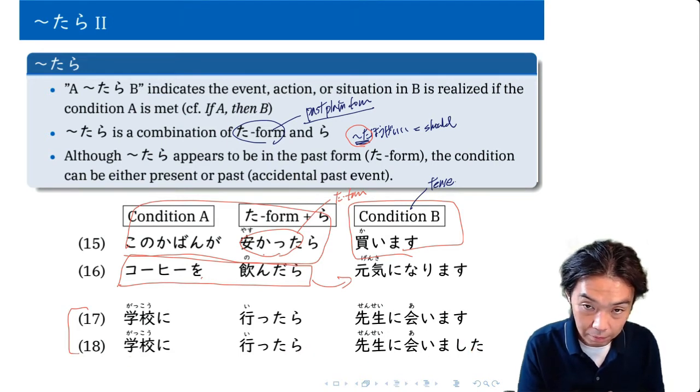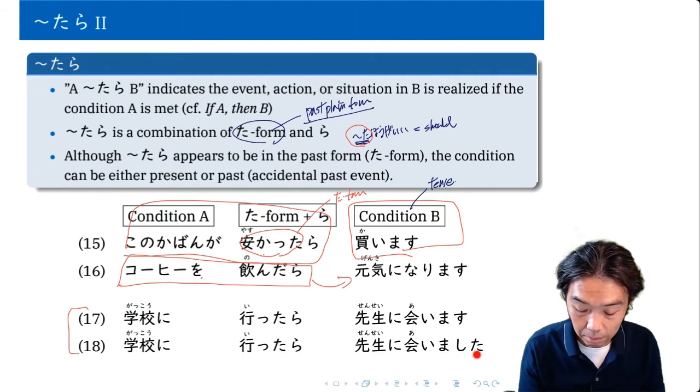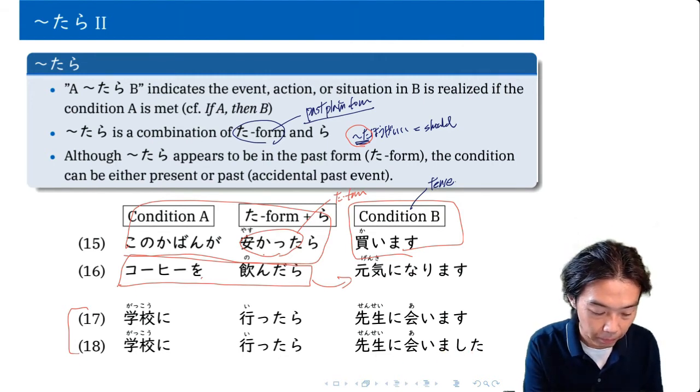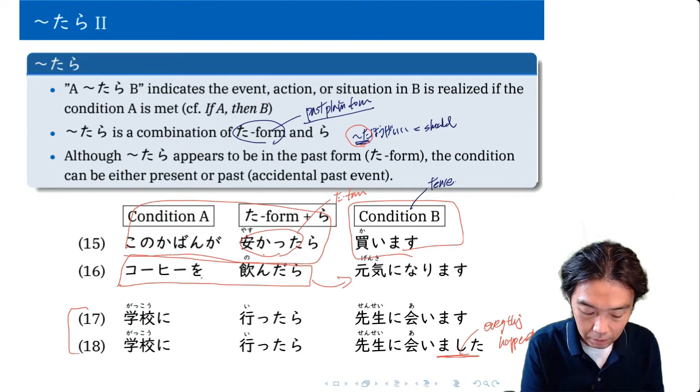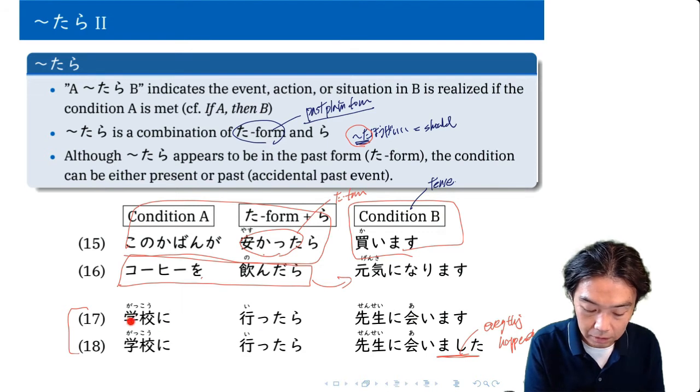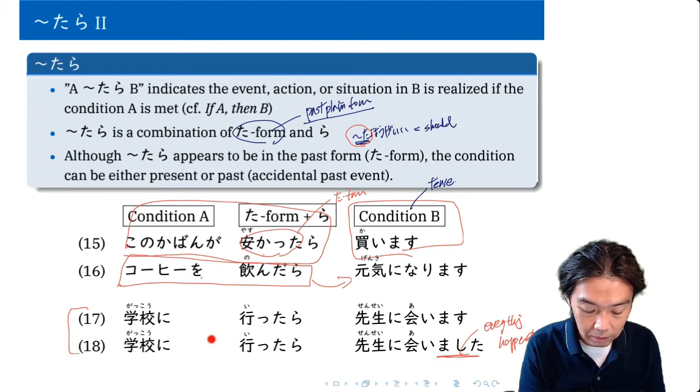学校に行ったら先生に会いました. So if you translate, it's almost like when I went to school, I saw the teacher, because of the past tense here. So the first one hasn't happened yet. 先生に会います. When I go to school, I will see the teacher. The second one is when I went to school, I met the teacher. I saw the teacher.